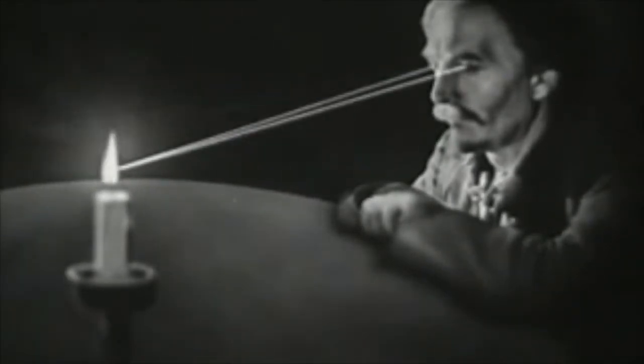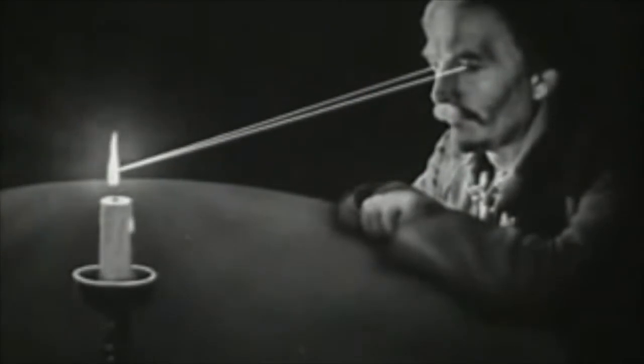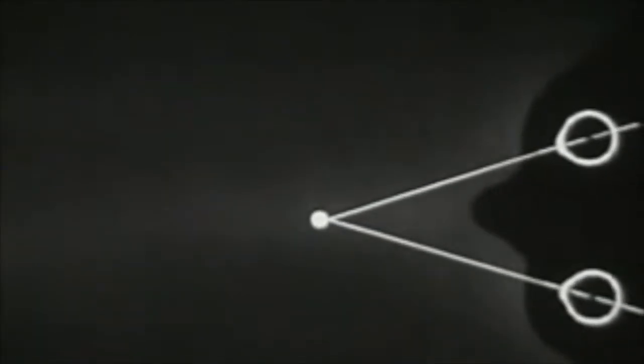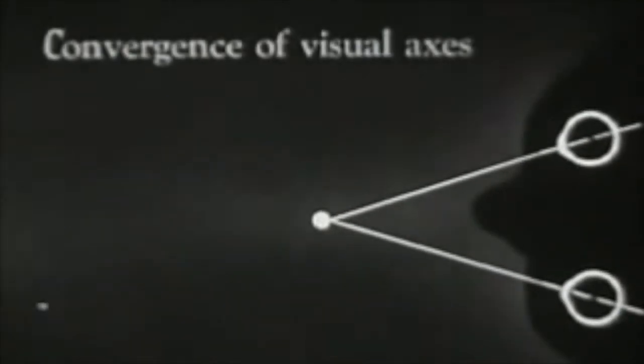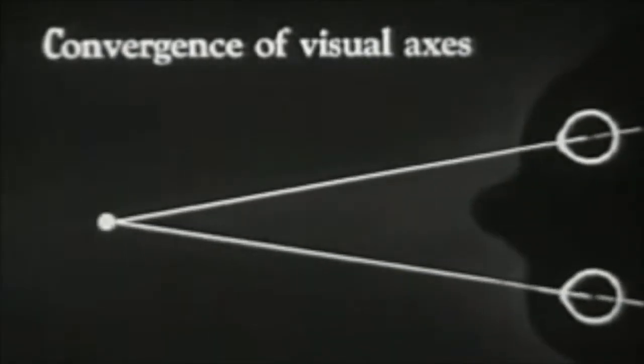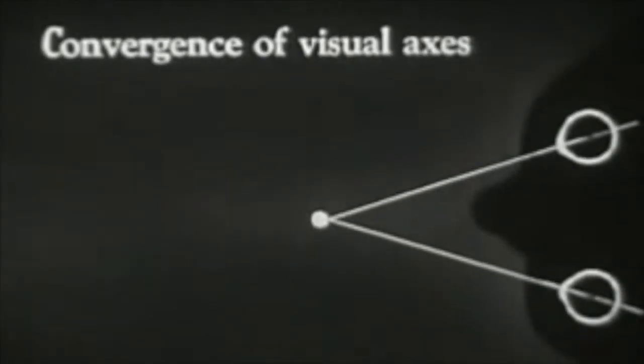It is also necessary that both our eyes be fixed upon the same point in order that we may see an object clearly. Thus, as an object approaches us from a distance, our eyeballs turn accordingly. This movement is called the convergence of visual axes. This action is shown here as the object approaches and recedes.